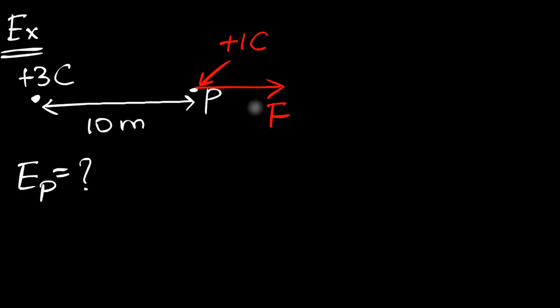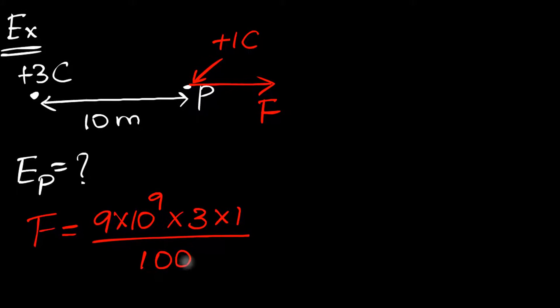We can calculate that force very easily because we know Coulomb's law. So the force acting on that one coulomb is going to be the Coulomb's constant, that's 9 times 10 to the power 9, times the two charges which we have to multiply, it is 3 into 1, divided by the distance squared, that's 100.